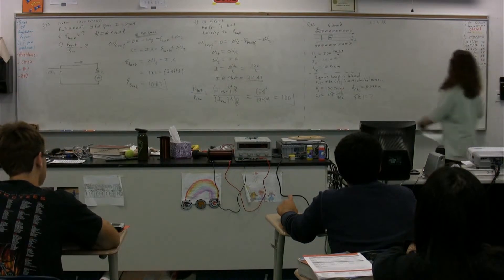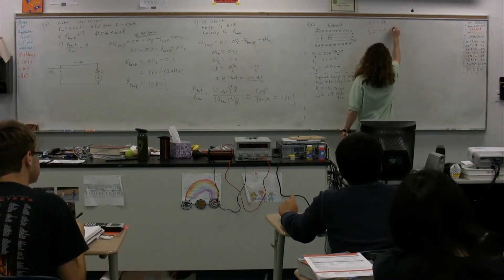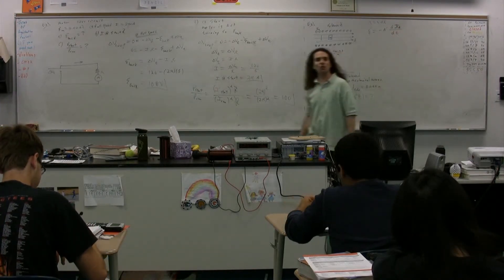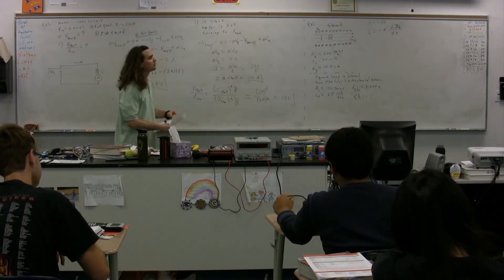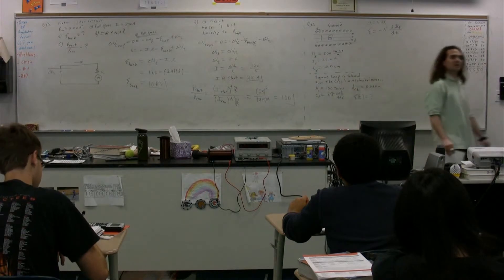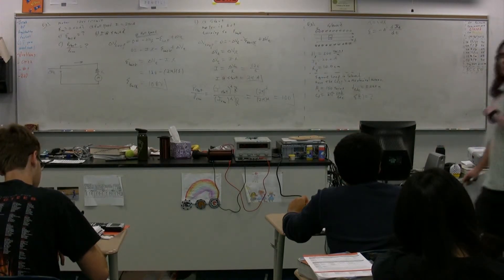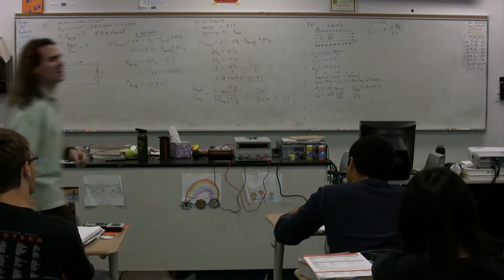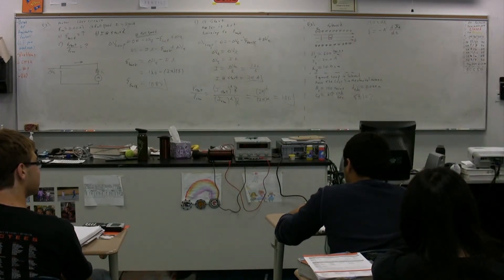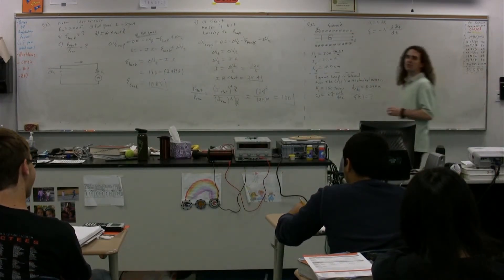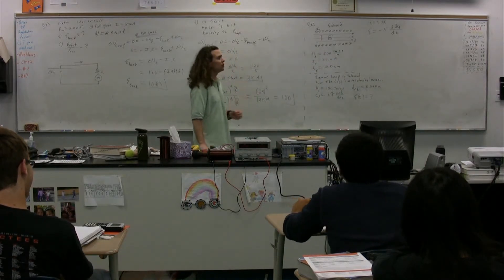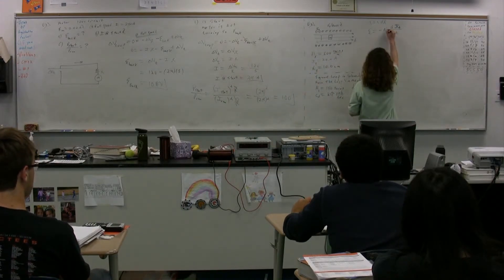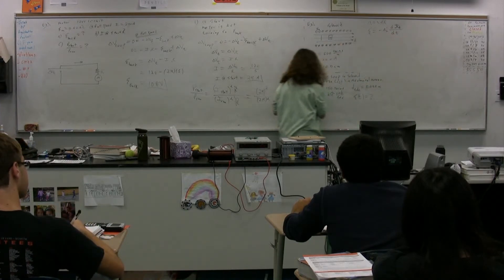EMF equals negative N times the derivative of the magnetic flux. This equation is called Faraday's law of induction — it has to do with the EMF that is induced when you have a change in the magnetic flux. Lenz's law has to do with the direction, which would be the negative in this equation. We're going to use Faraday's law, and this N is going to be the number of loops in the square.